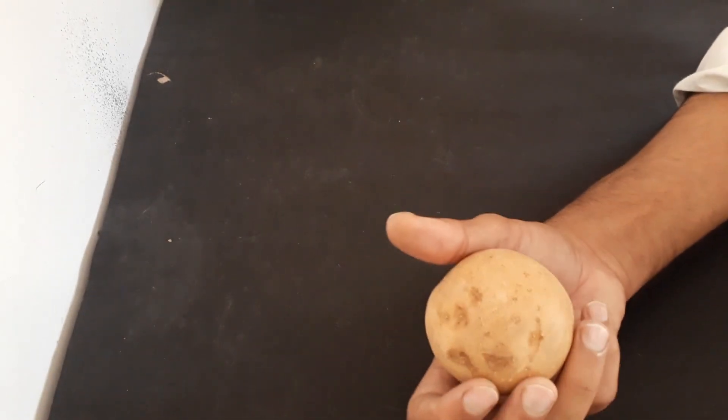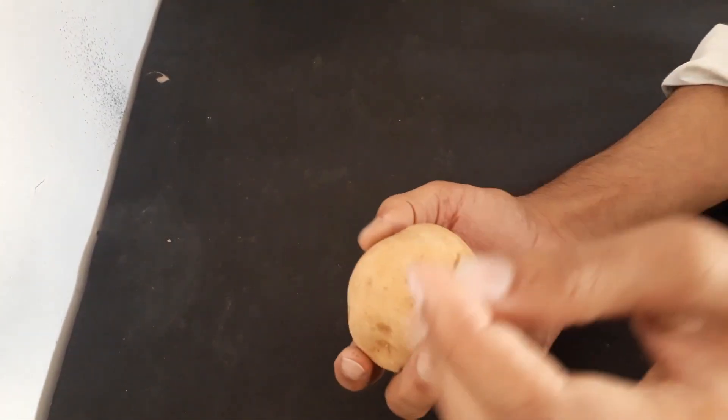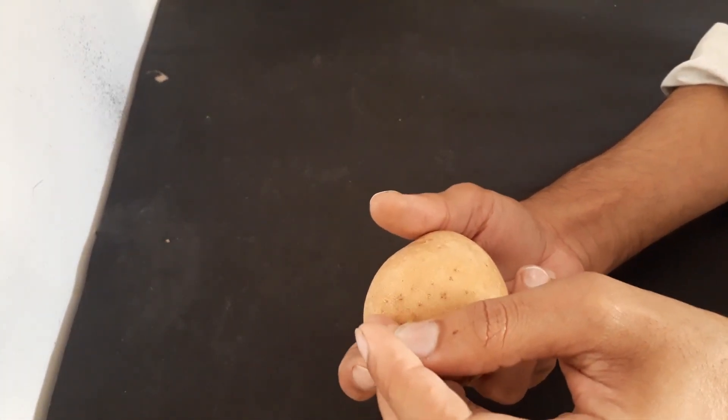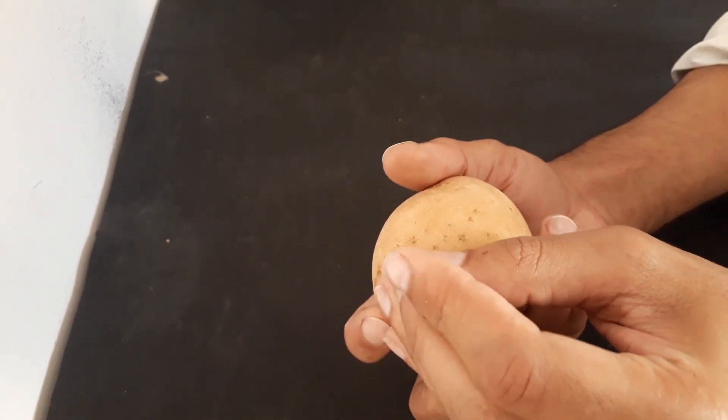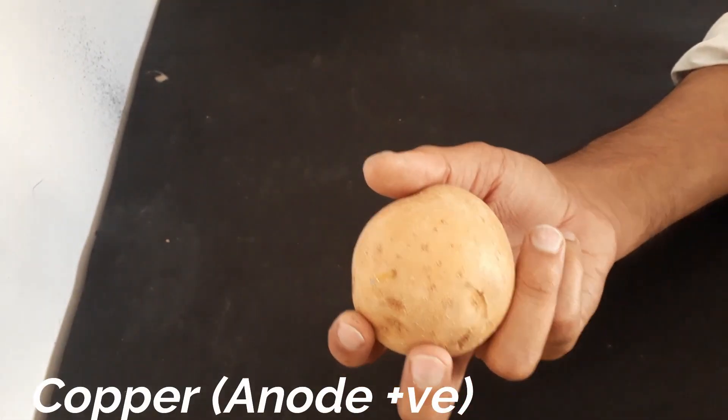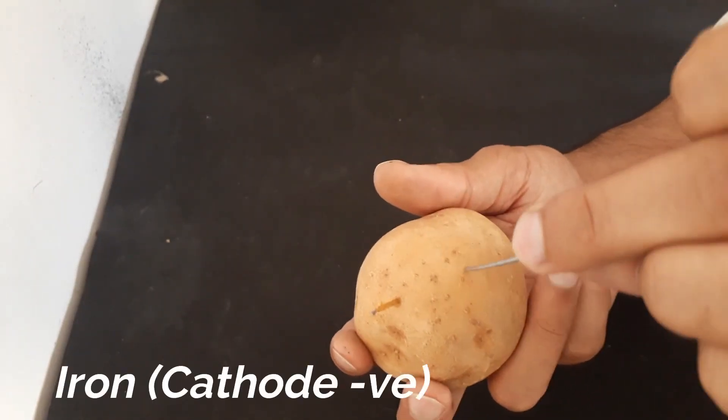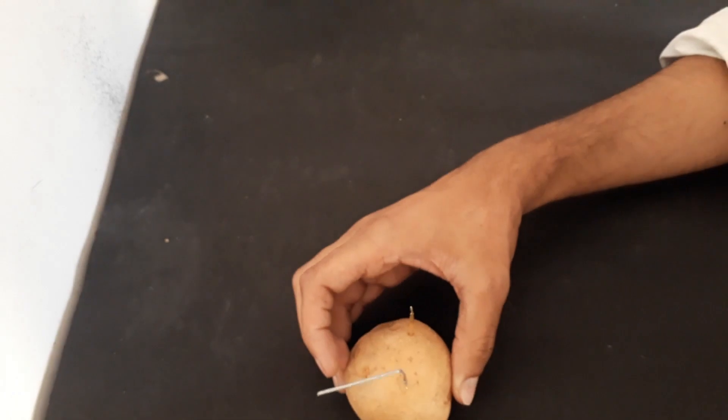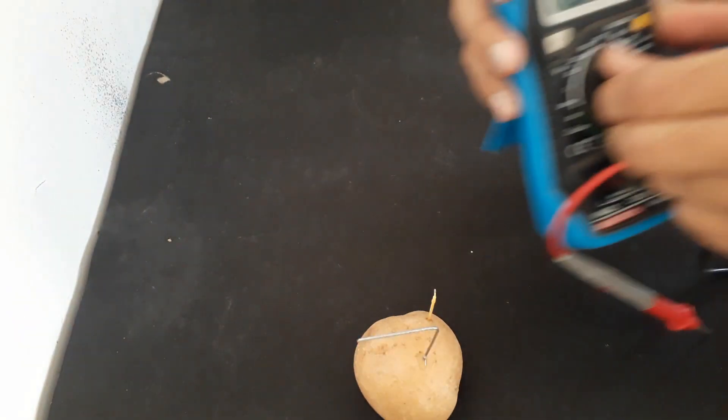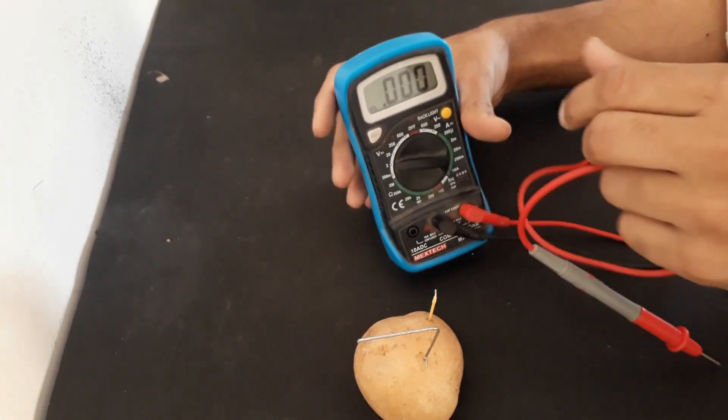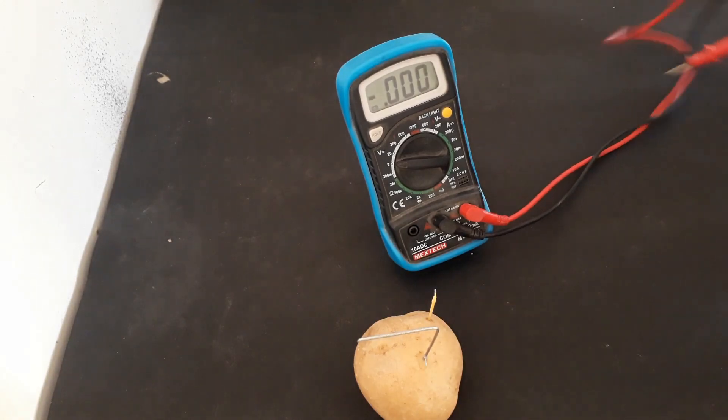So here we have this normal sized potato. We will put a copper nail which will act as anode or positive, and this galvanized or alloy nail which will act as cathode.